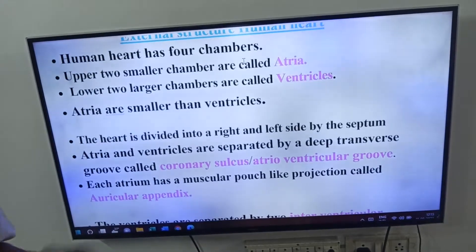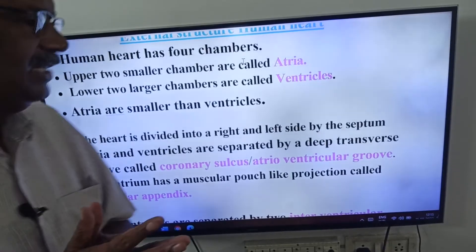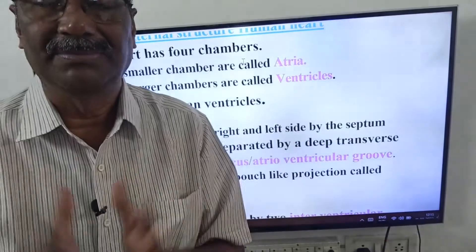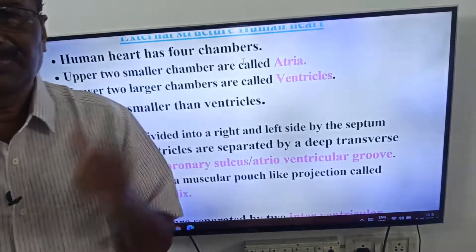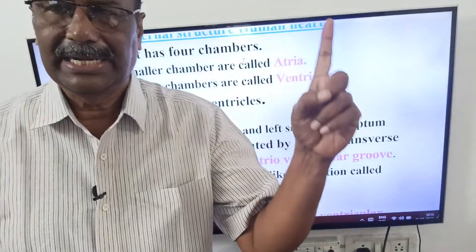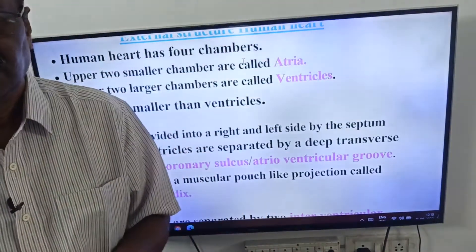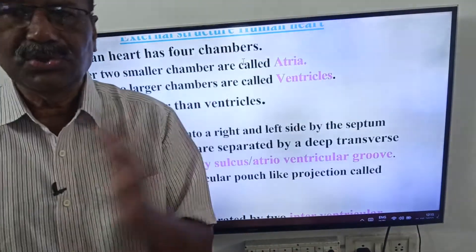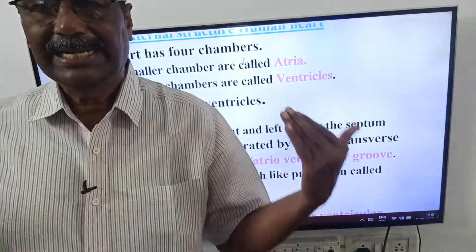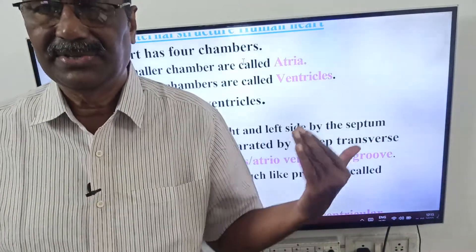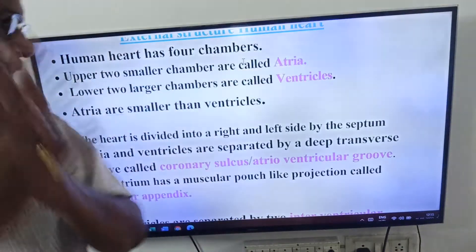Now, the heart is divided into right and left sides by the septum. We have four chambers — upper two are atria, lower two are ventricles — and these four chambers are divided into right and left sides by the septa, or septum.